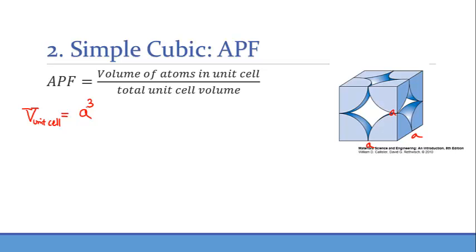So, if you wanted to know the total number of atoms, we first find out how many corner atoms there are. Then we have to multiply by the fraction of one eighth because each atom is shared between a total of eight unit cells. So here you get one total atom.